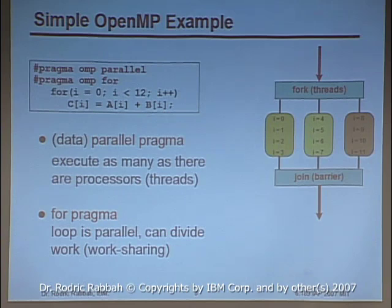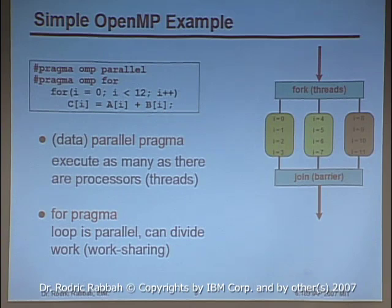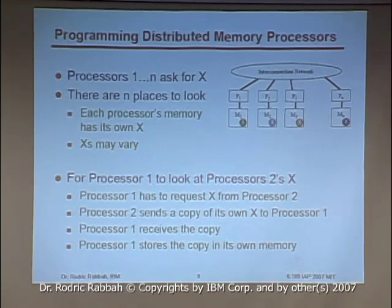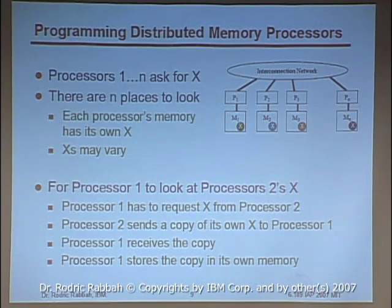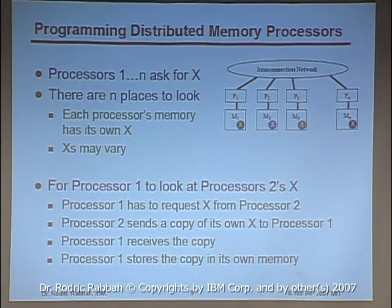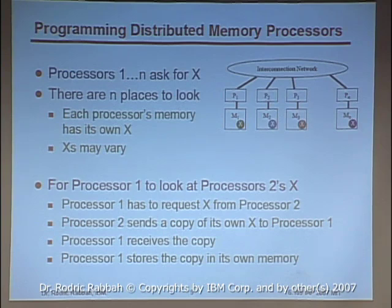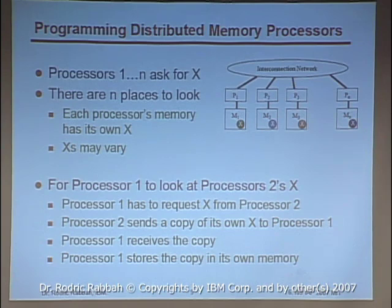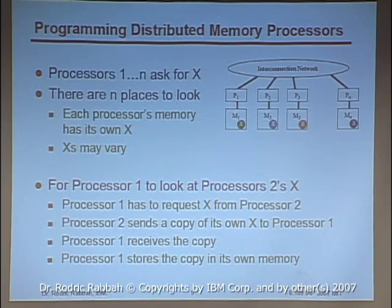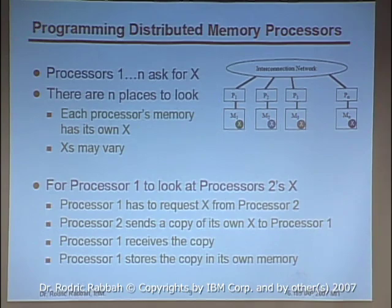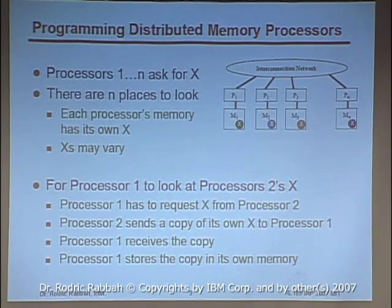In contrast, for distributed memory processors — to recap previous lectures — you have n processors, each with its own memory, sharing an interconnection network. Each processor has its own address x, so when processor P1 asks for x, it looks in its own local memory. If all processors ask for the same address x, each looks in a different place. If P1 wants the value stored in P2's address, it has to explicitly request it — P2 sends the data, and P1 has to figure out where to store the copy.